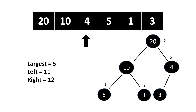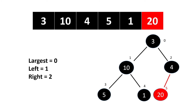We can now see that a max heap has been created. The next task is replacing the root node with the last node — so twenty will be replaced by thirty — and the size is reduced by one. Now we change our root element and start performing max heapify from the root element.